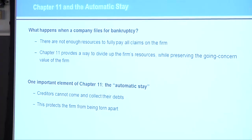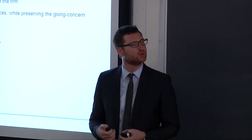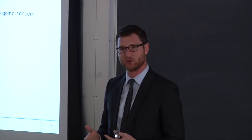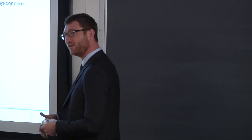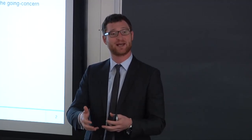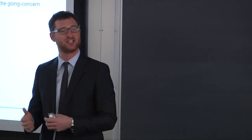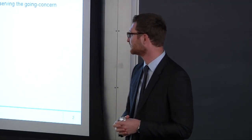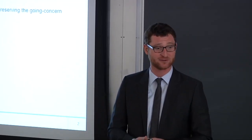Bankruptcy is usually filed when there are not enough resources to pay all of those claims. Chapter 11 provides a rule framework to divide up the firm's resources and potentially restructure the firm. The important thing about Chapter 11 is that it tries to preserve the going concern value of the firm. One of the most important elements is something called the automatic stay — when a firm files for Chapter 11, creditors can't just come and collect their debts. Even collateralized creditors cannot simply seize a machine the firm owns. The automatic stay gives the company breathing room to restructure.